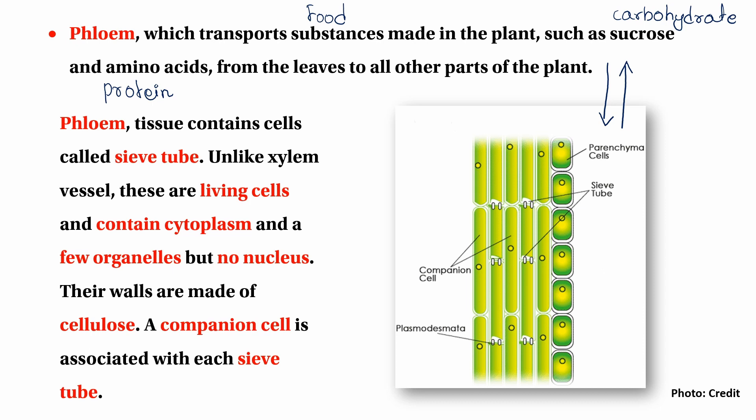What is cytoplasm? Phloem sieve tubes have dense cytoplasm. Phloem sieve tubes have fused organelles, having lost their nucleus and many organelles. Combination is associated with the sieve tube. Cellulose compounds form part of the cell wall structure.